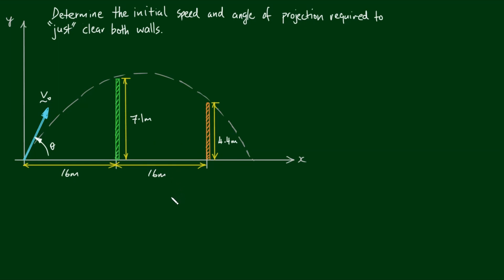And we've got a particle or a ball that's fired 16 metres to the left of the taller wall. And the question asks us to determine the initial speed and angle of projection required to just clear both walls.